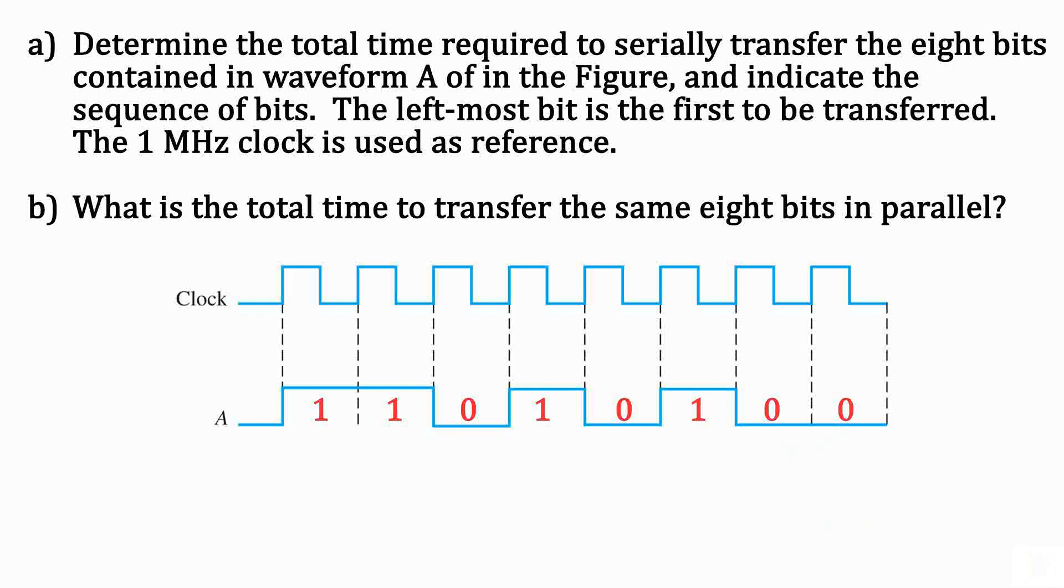Now to find how long it takes to transfer this bit sequence serially. We need to find the period of the clock. Once we have that, we multiply by 8, since there were 8 bits that had to be read one right after the other.